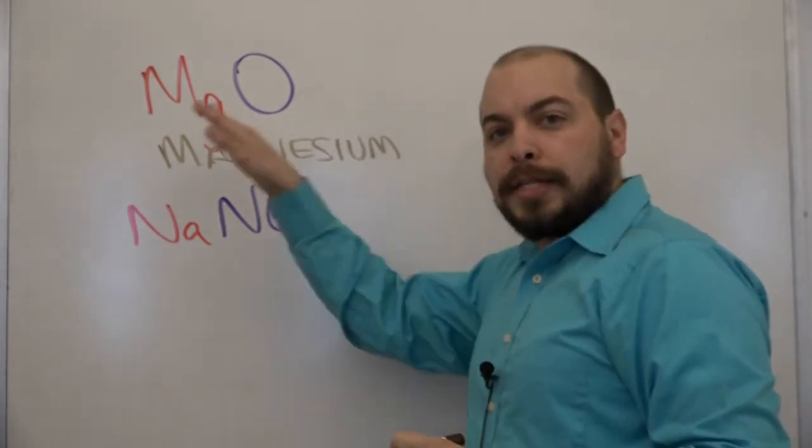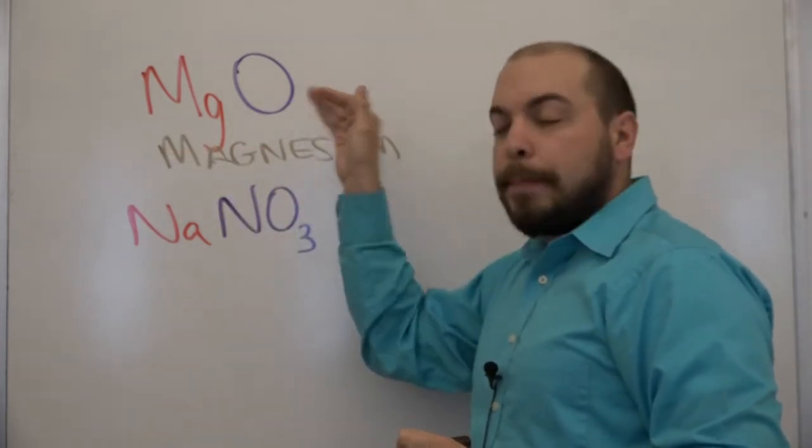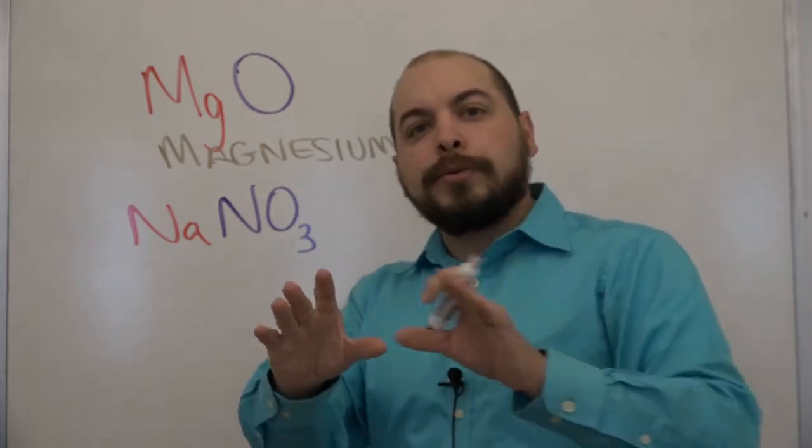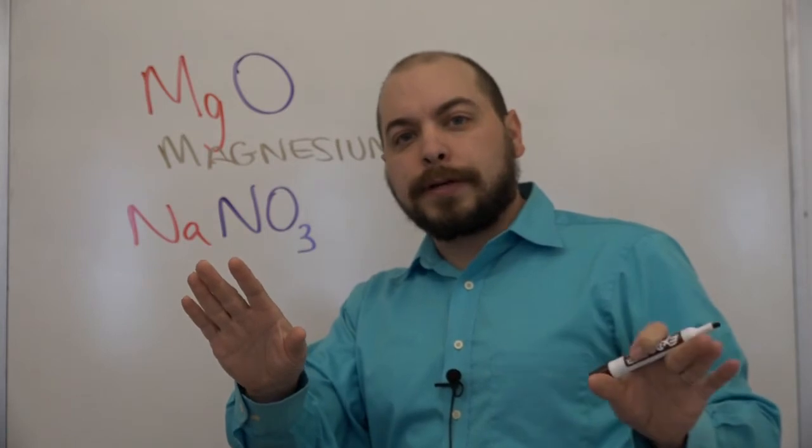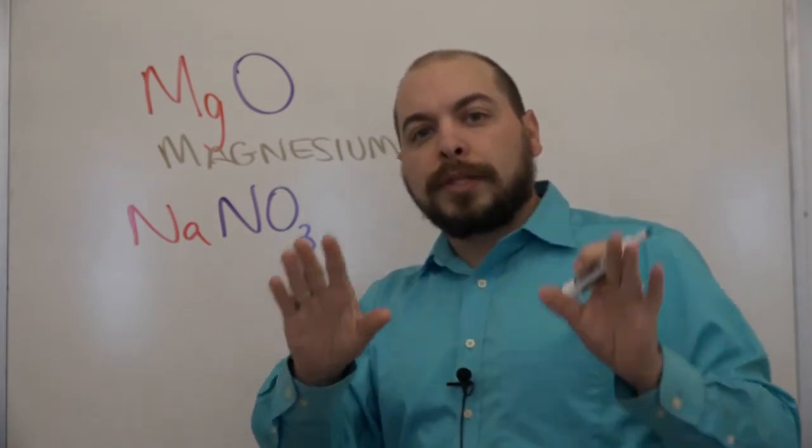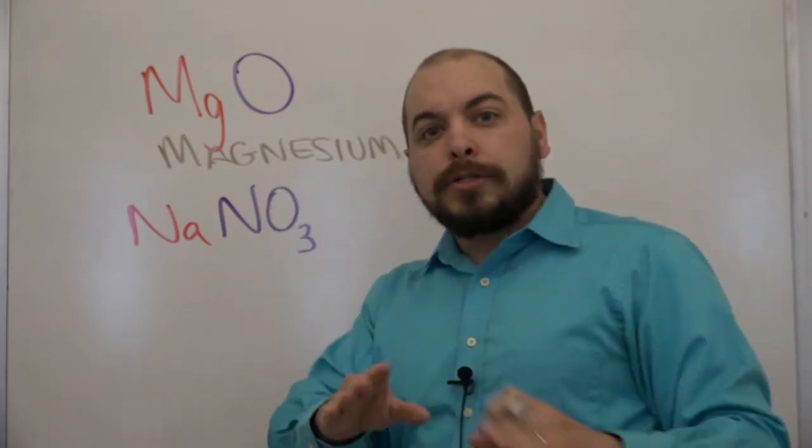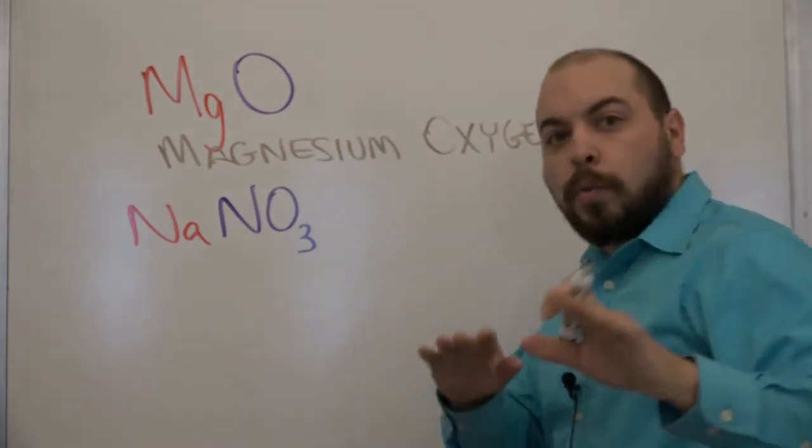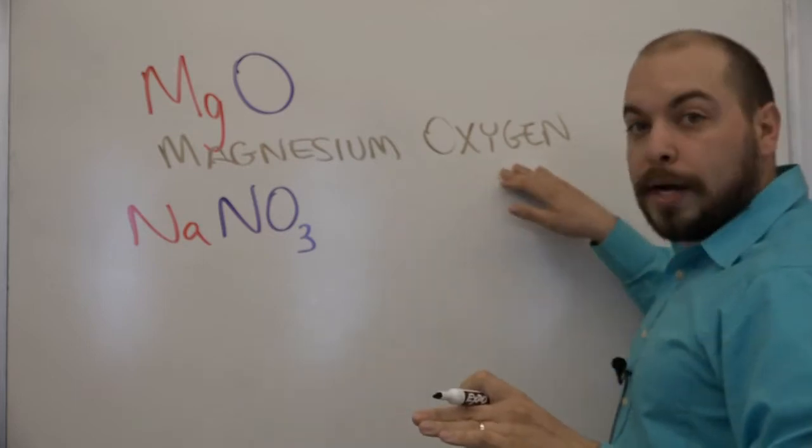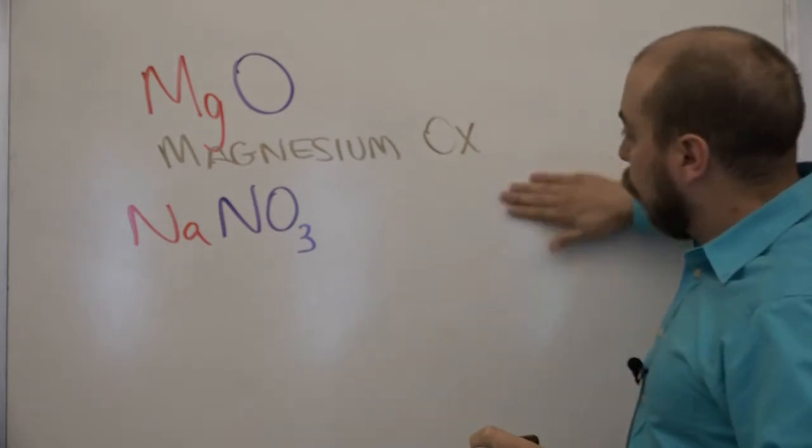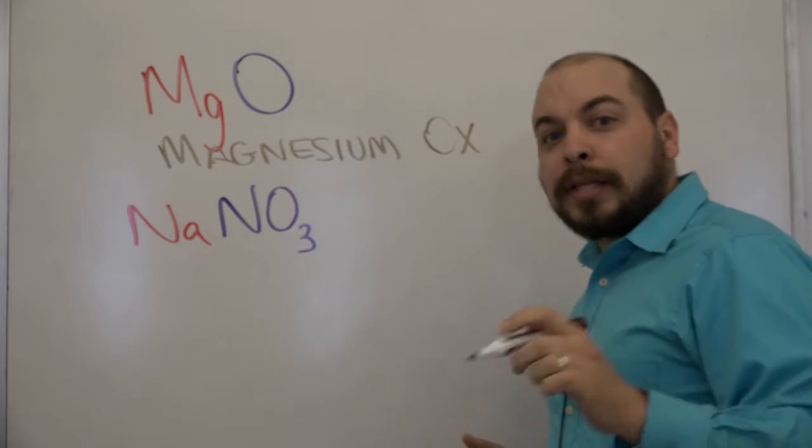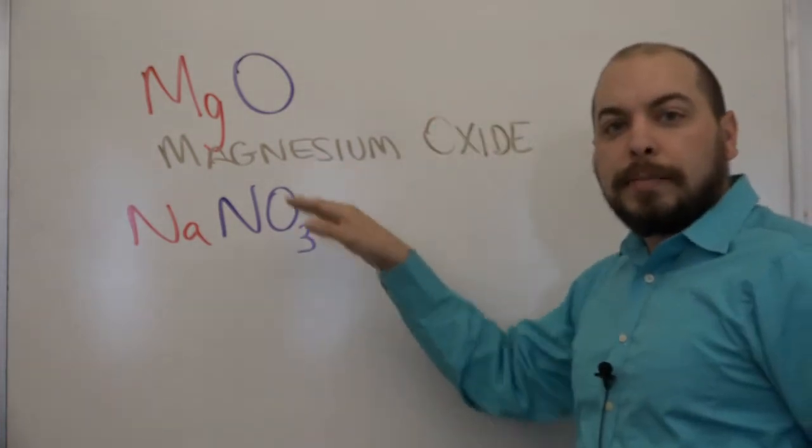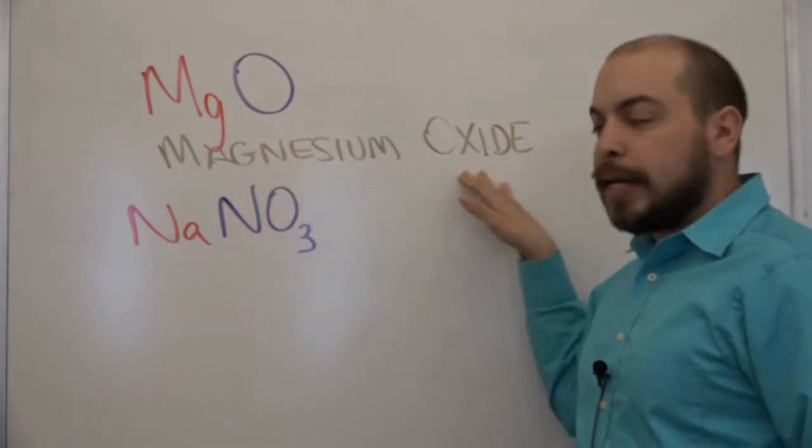Now magnesium being the cation we're just going to follow it with the anion but it's not as simple as writing oxygen. Instead what we're going to do is we're going to drop the suffix of oxygen and we're going to replace it with ide, I-D-E. So let me show you how this is done. Essentially we take the Y-G-E-N and replace it with ide. Therefore the name of MgO is magnesium oxide.